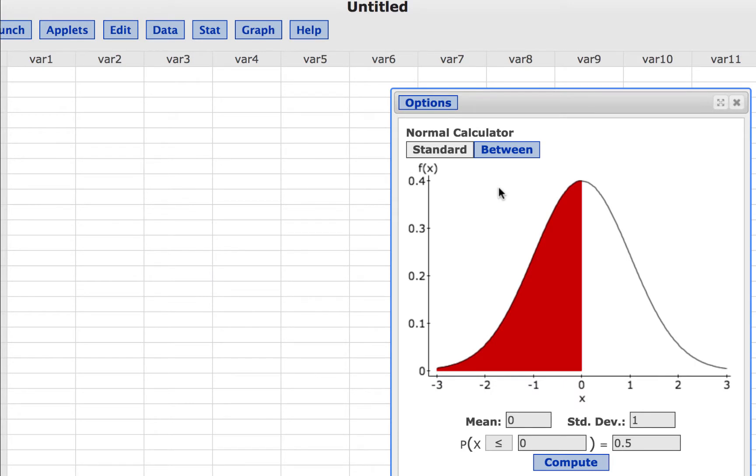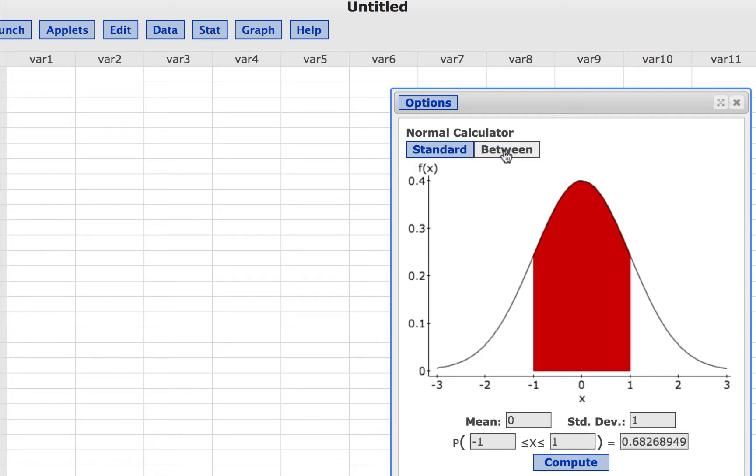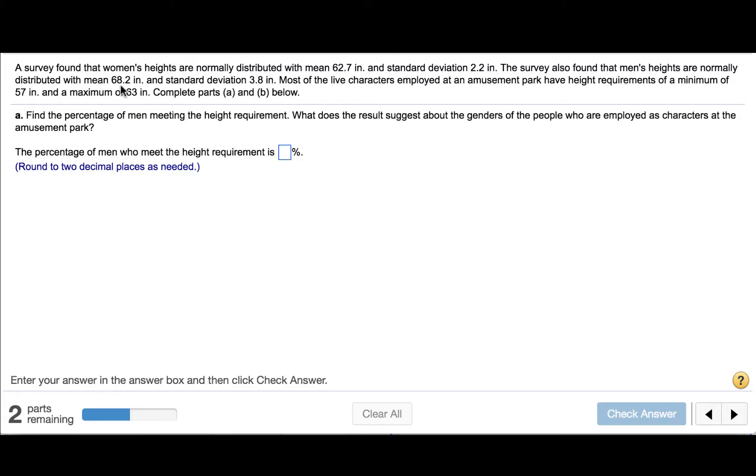We are looking for the percentage of men who are between 57 and 63 inches tall. So we'll click the Between function. We are told that the men's heights are normally distributed with a mean of 68.2 inches and a standard deviation of 3.8 inches.